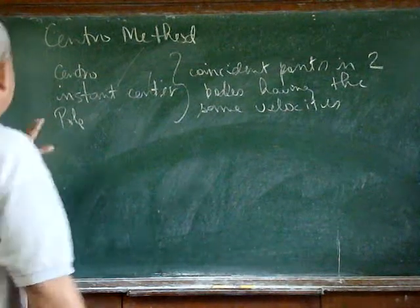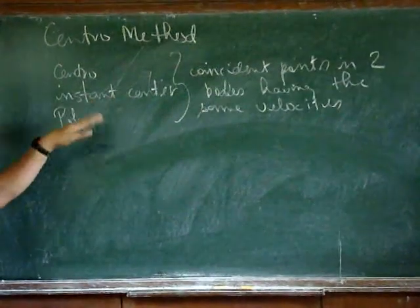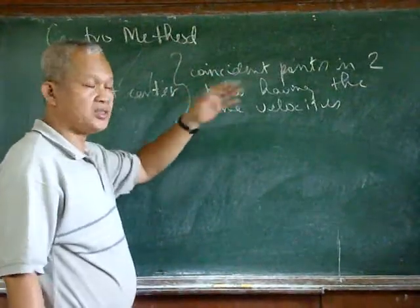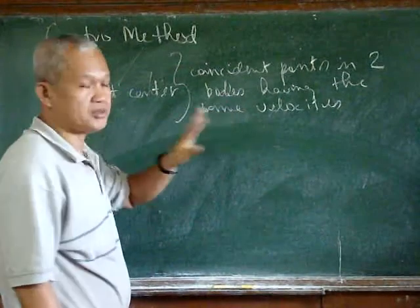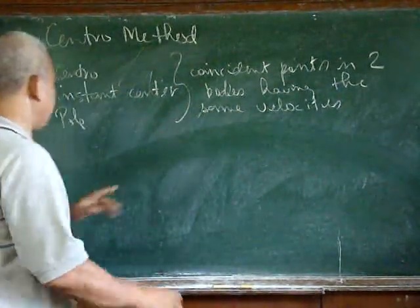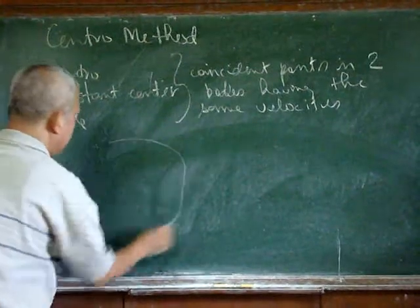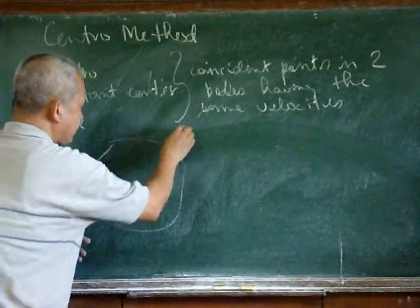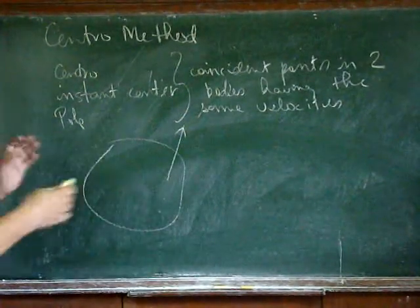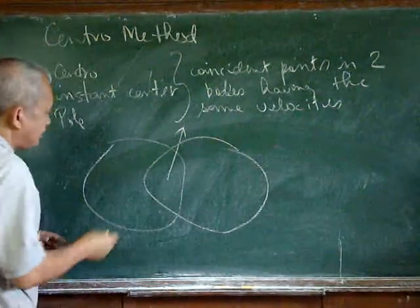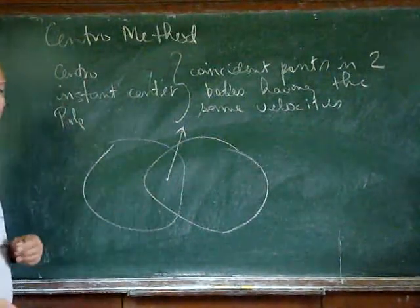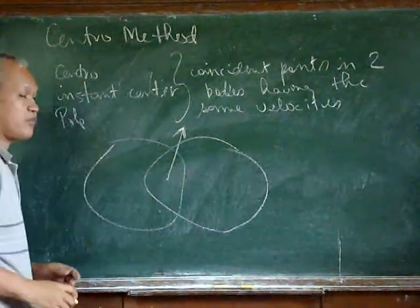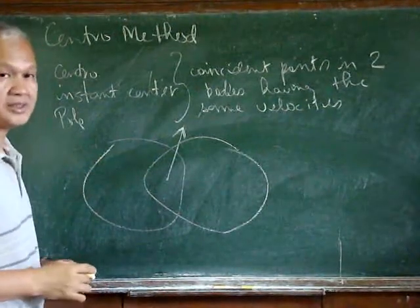What is the central method? In the central, or in the sub-center, a central is just coincident points where two bodies have the same velocity. So we may have a certain body, and at a particular point in that body there is a certain velocity. If there is another body at which there is also the same point, coincident with the previous point, and they have the same velocity, then that is a central, or a pole.